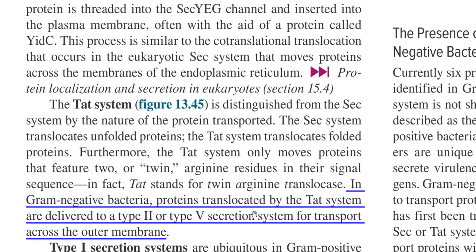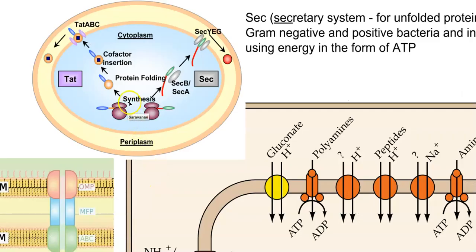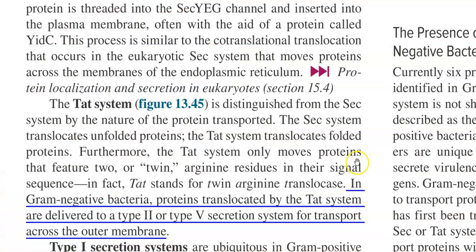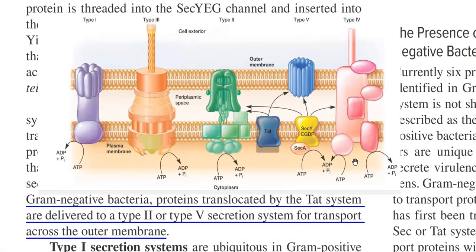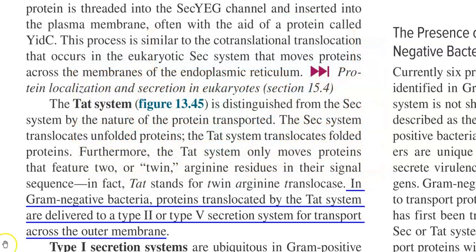Different chaperones help in proper folding of proteins, and certain chaperones can insert cofactors to aid in folding. The formed protein is subjected to proper folding, even with insertion of certain cofactors. Finally, the TAT system is involved in translocation of the protein. The TAT system usually consists of three different proteins — that is, TatA, TatB, and TatC proteins. In gram-negative bacteria, proteins translocated by the TAT system are further delivered to the type 2 or type 5 secretion systems for transport across the outer membrane.